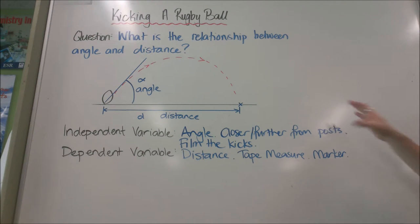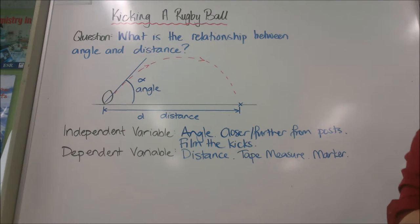So now we've looked at the independent variable and the dependent variable, we have to control every other variable. Everything else has to be controlled, so we're going to have a wee think about what those other variables are going to be.